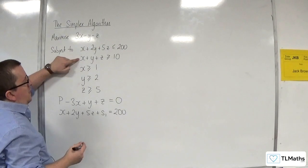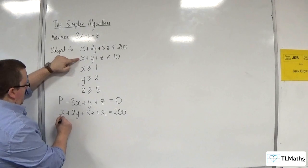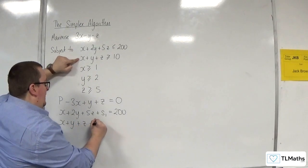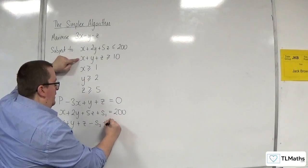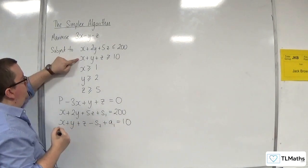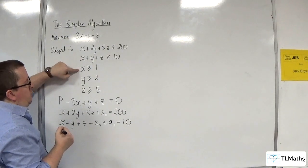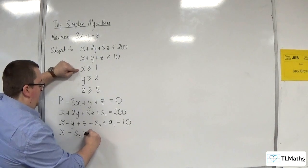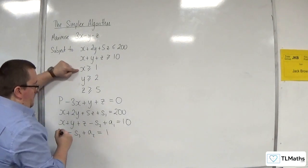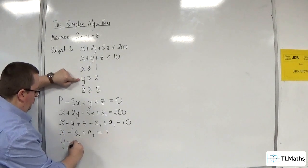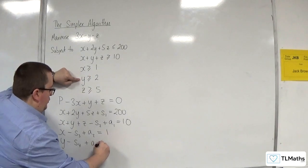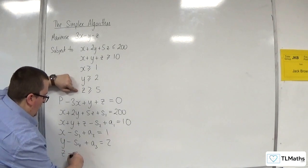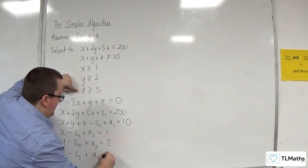Then I've got x plus y plus z is greater than or equal to 10. Because it's greater than or equal to, I need to subtract a surplus variable and add on an artificial variable. For x is greater than or equal to 1, I must subtract a surplus variable and add on an artificial variable to make it equal to 1. For y is greater than or equal to 2, I must subtract a surplus variable and add on an artificial variable, equal to 2. And for z is greater than or equal to 5, I must have z take away a surplus variable plus an artificial variable equal to 5.